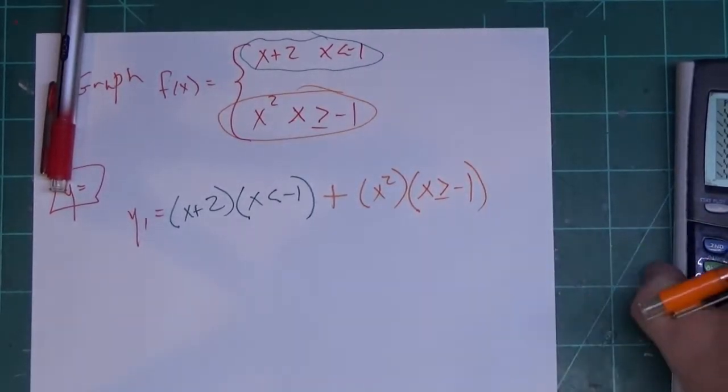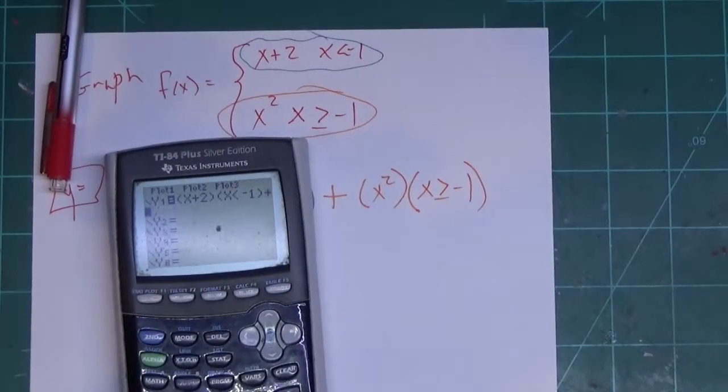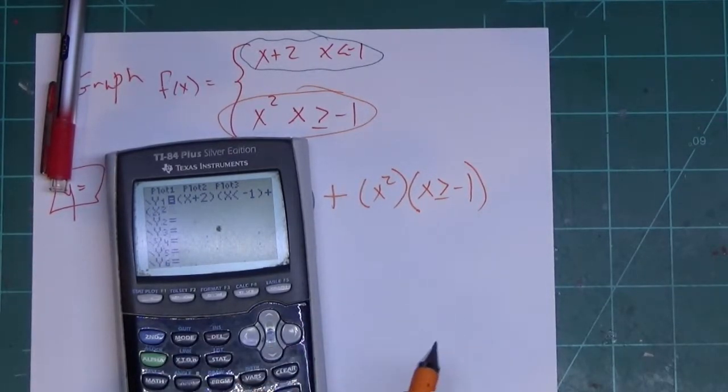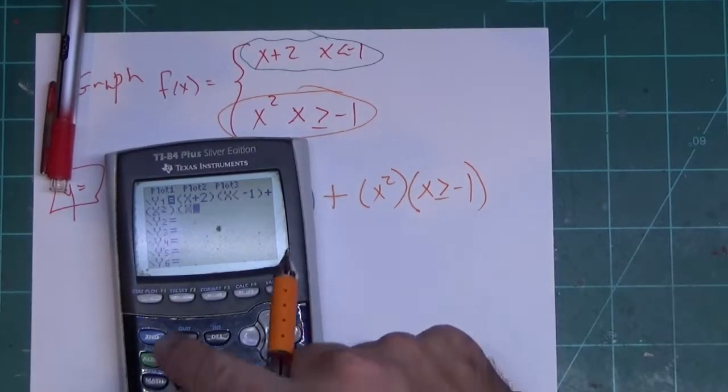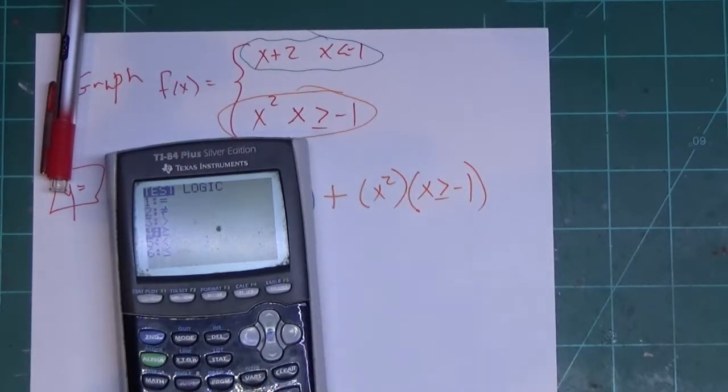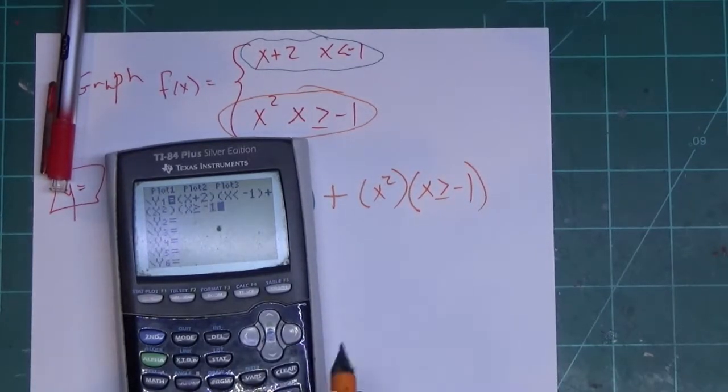And that's exactly what I'm going to type in here. I'm going to put plus parenthesis, X squared, close parenthesis, open parenthesis, X, hit second test again to get your inequalities, do my greater than or equal to negative 1, close parenthesis.